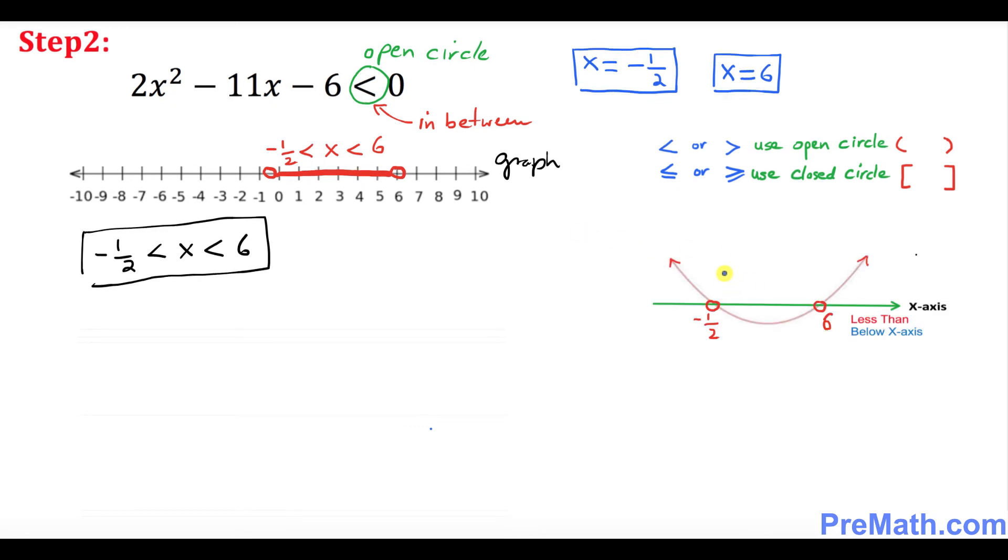And I want you to look at this graph over here. This is an x-axis and this graph represents this quadratic function. So you can look over here, our inequality states less than. Less than means it's going to be below x-axis. Always remember. So below x-axis is only this part. We are restricted to only this part as you can see over here. So no wonder our graph is going to be only this part as you can see over here. So that's the reason it's in between.